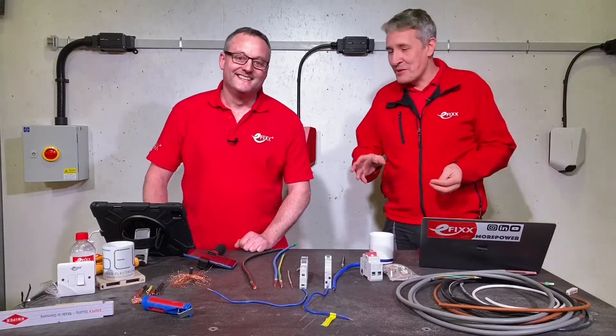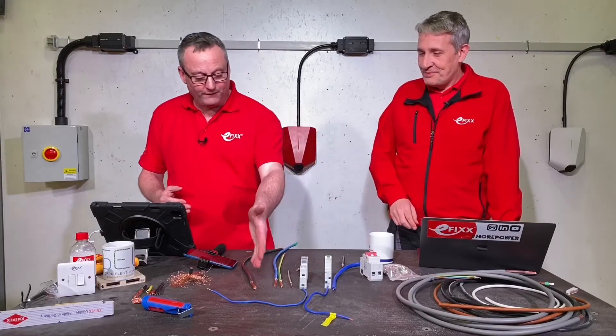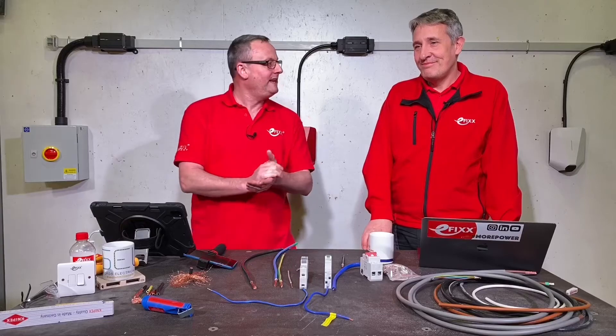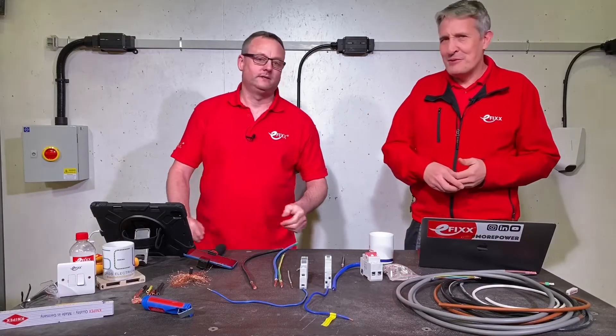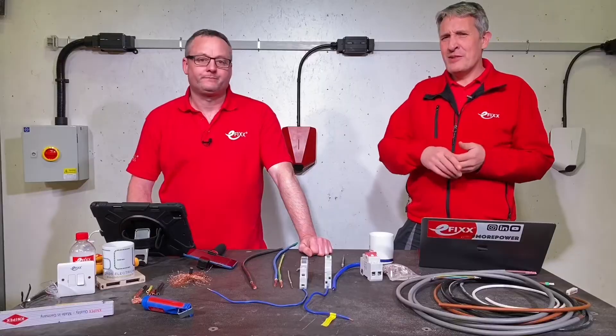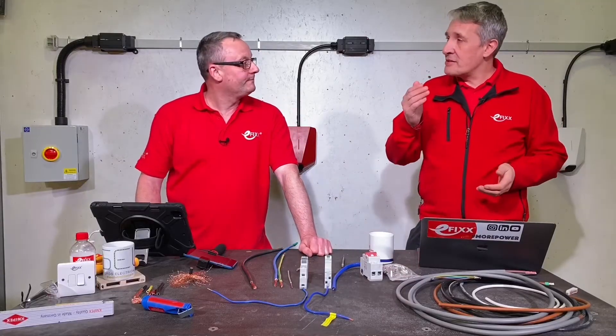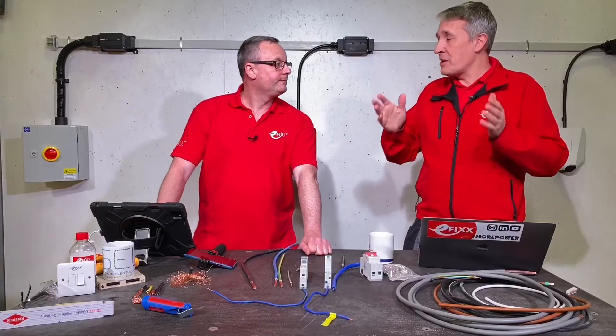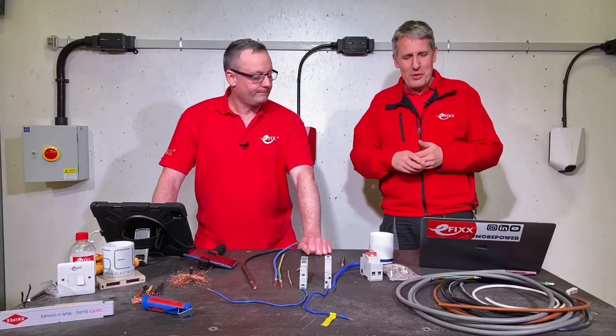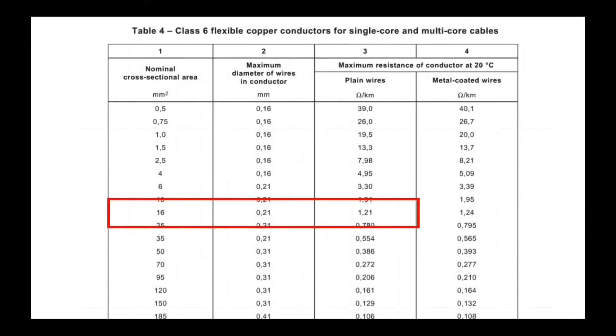We did a video a while ago that looked at fake and substandard cables — someone had short-changed the customer and the copper in there was reduced, so there weren't as many strands as expected. With 504 strands to go at, if you missed 10 out would anyone really know? The way to check is the resistance of the cable, because that is defined in the standard. A 16mm cable's maximum resistance should not be more than 1.2 ohms per kilometre for a class 5 or class 6 conductor.